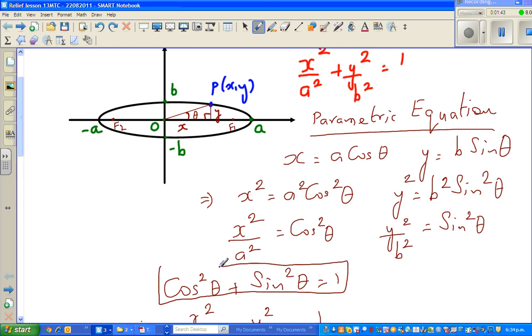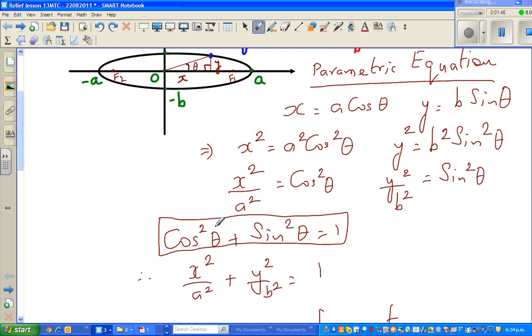And we have the most basic identity. So we are substituting what is cos squared: x squared over a squared plus y squared over b squared is equal to 1.